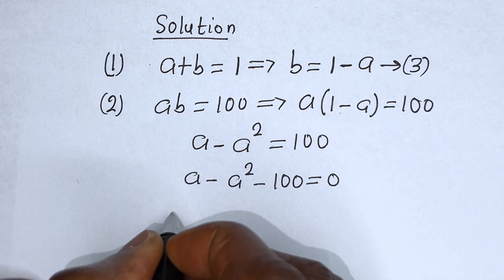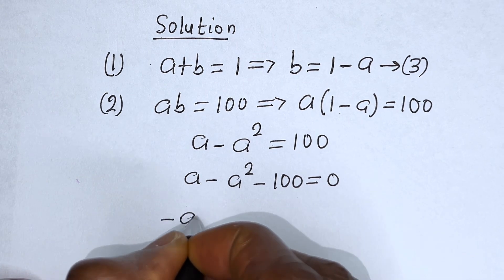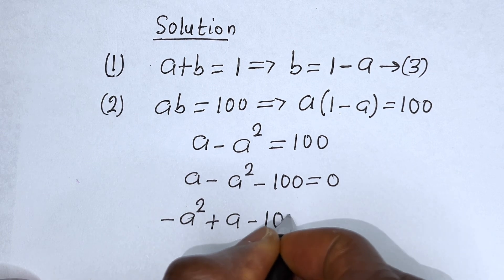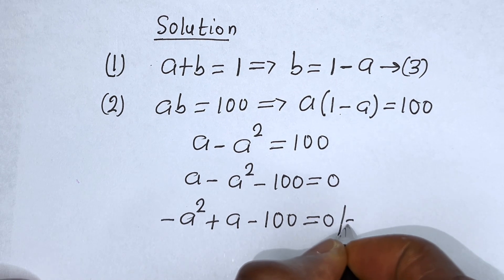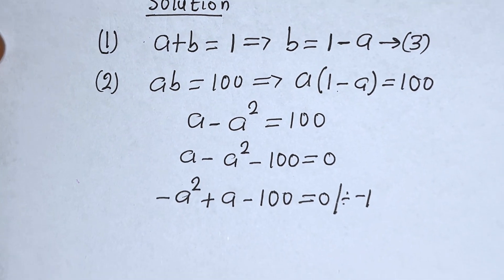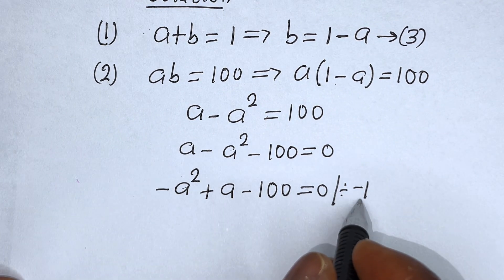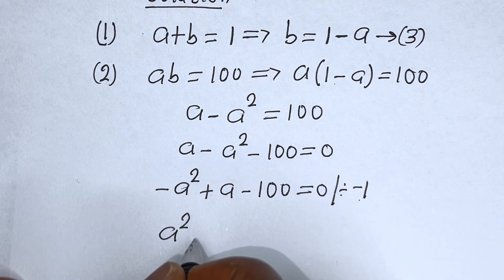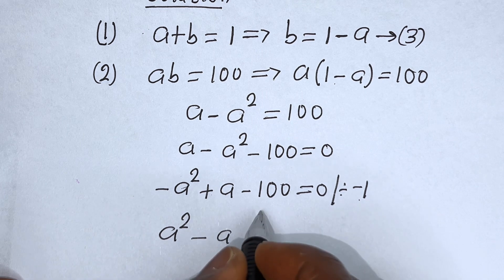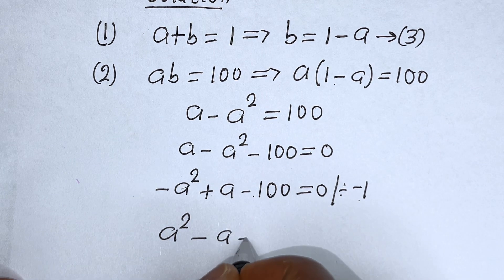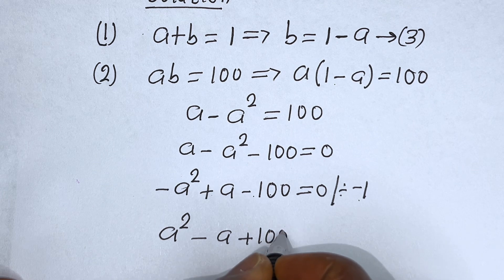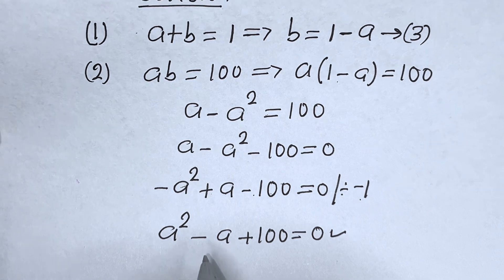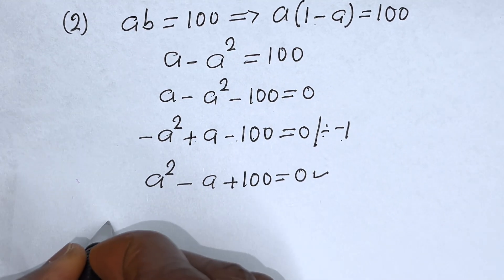Let us put this in standard form: minus a squared plus a minus 100 is equal to zero. We can now divide all through by minus one. Minus a squared divided by minus one gives a squared; plus a divided by minus one gives minus a; minus 100 divided by minus one gives plus 100. So we have a squared minus a plus 100 is equal to zero. This is a quadratic equation — let us solve this using the quadratic formula.